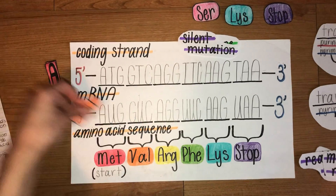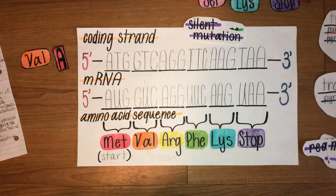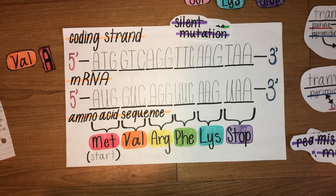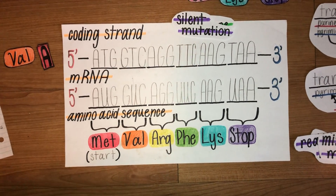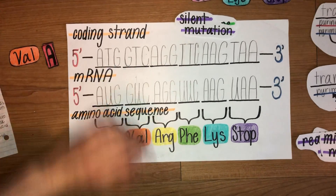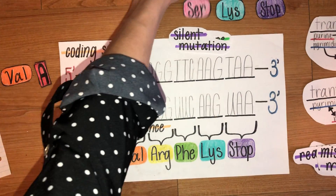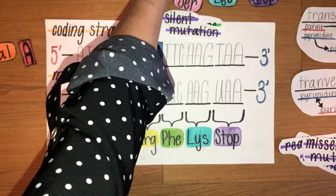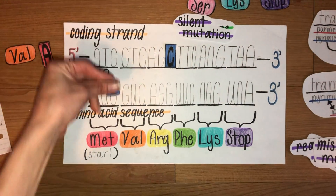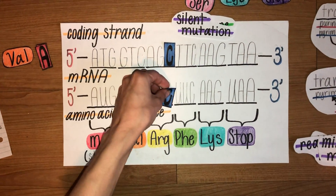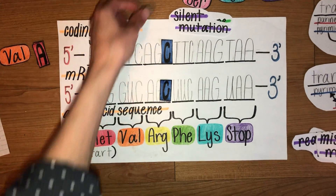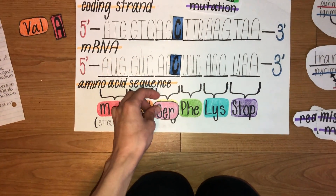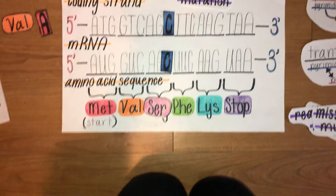Moving on to our next example, we're going to be looking at a mutation in the third codon. This one is going to be a transversion as we're going from G to C. Looking at our corresponding changes in the mRNA sequence, we can find that our amino acid sequence changes as well.